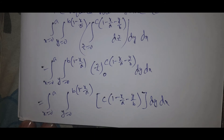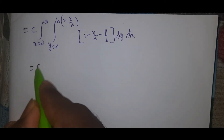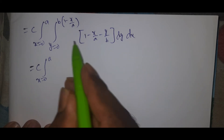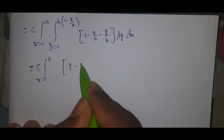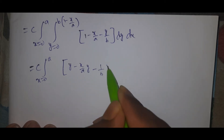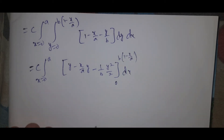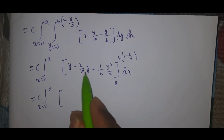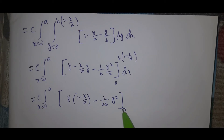Integrating with respect to z first: the inner integral gives c(1 - x/a - y/b) minus 0. So the expression becomes the integral from x = 0 to a, y = 0 to b(1 - x/a), of c(1 - x/a - y/b) dy dx.